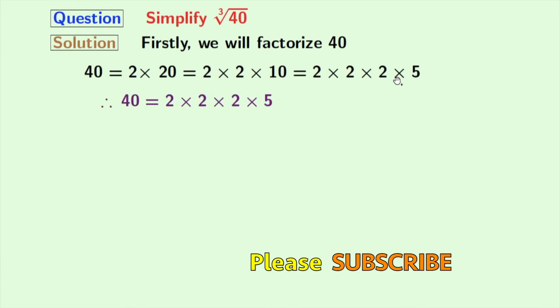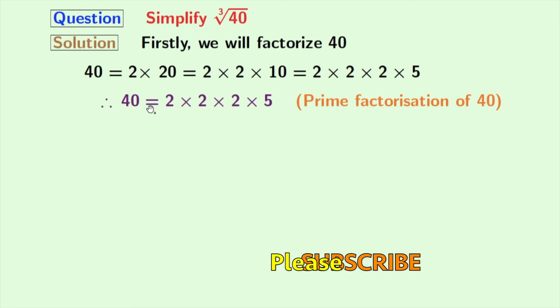So finally, we have 40 is equal to 2 times 2 times 2 times 5. And this is the prime factorization of 40.